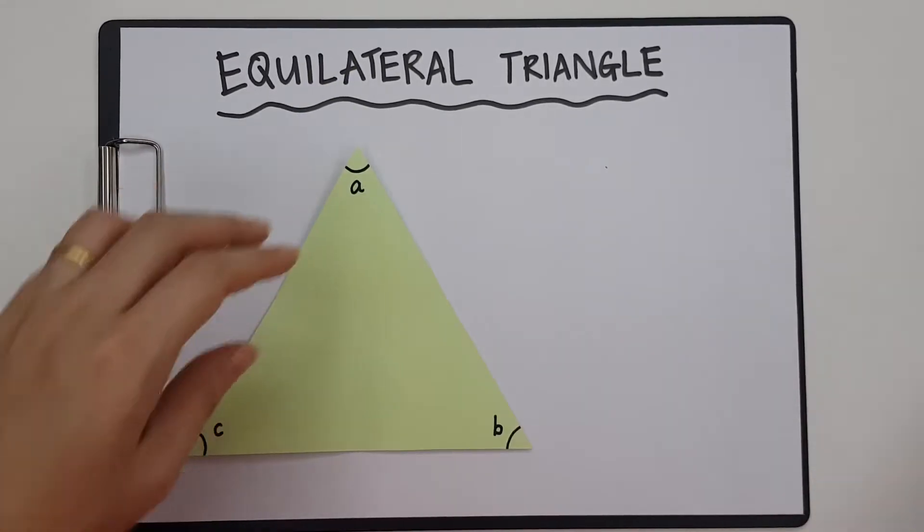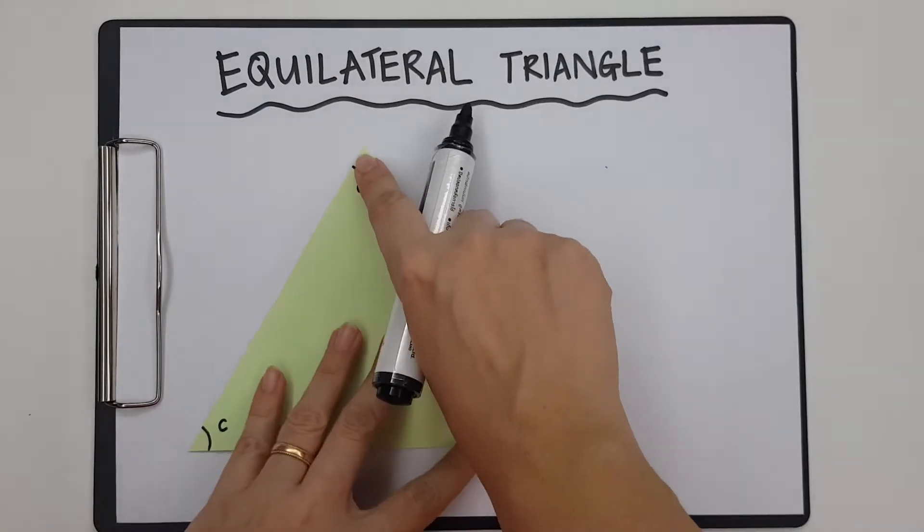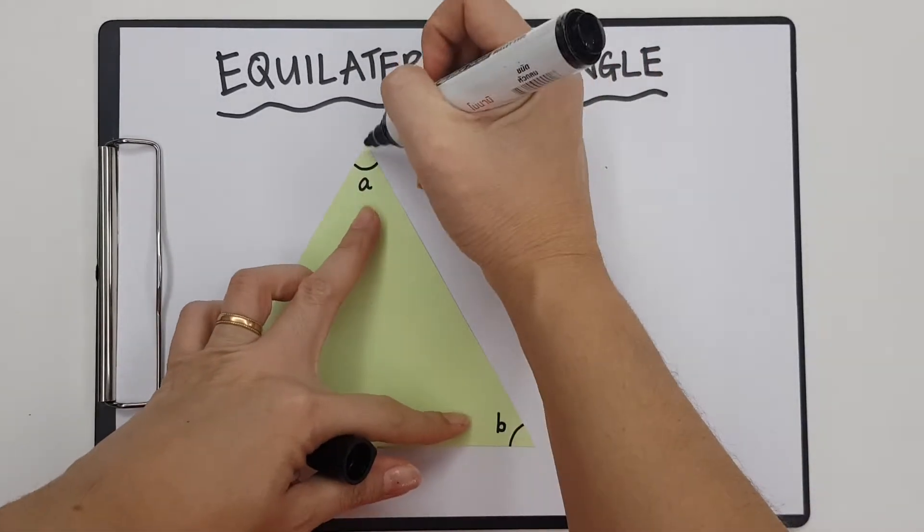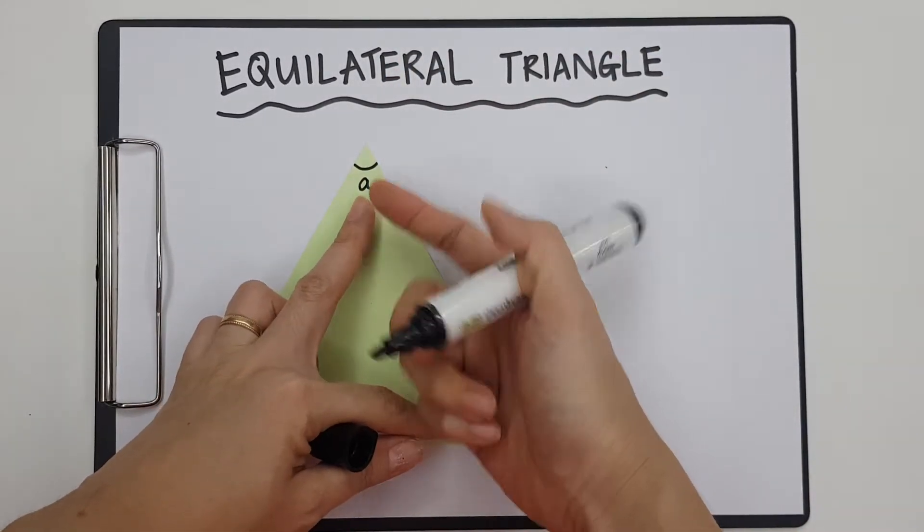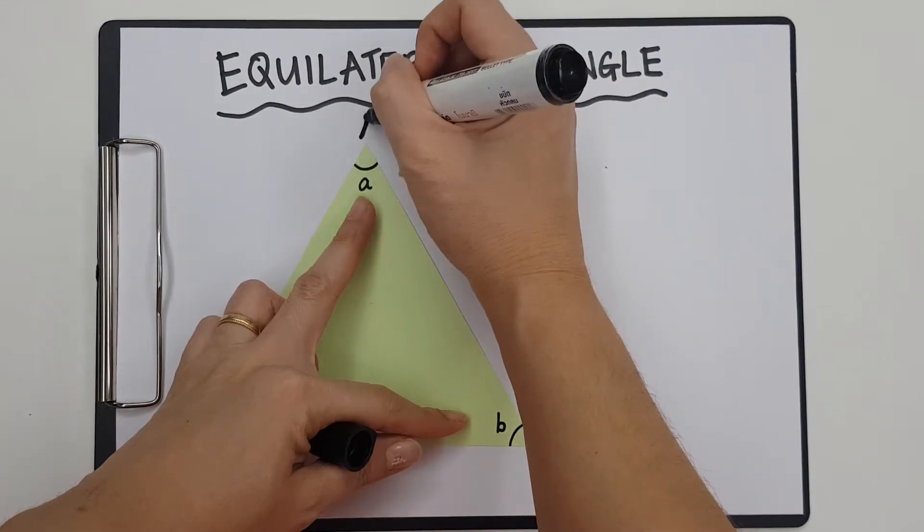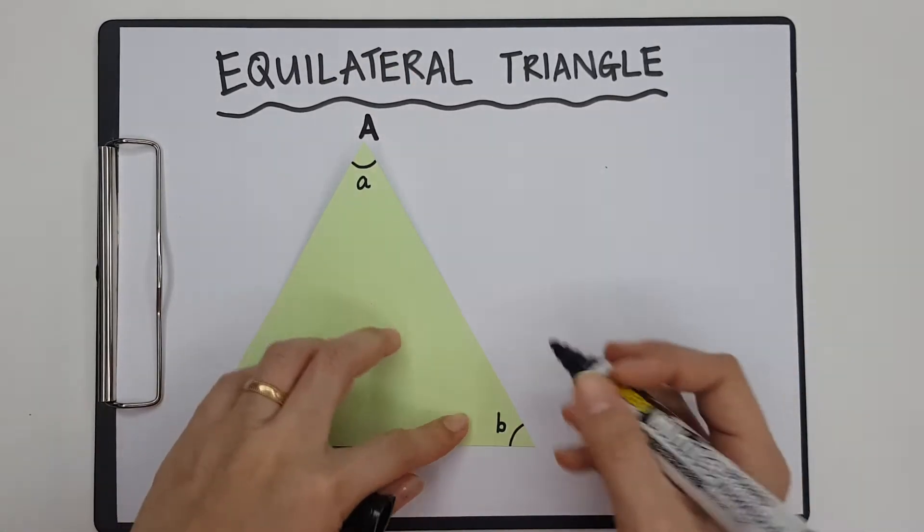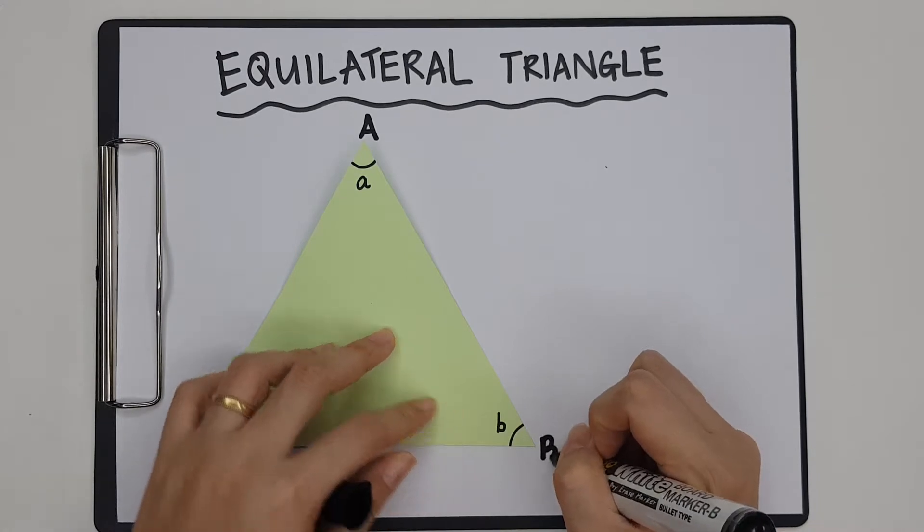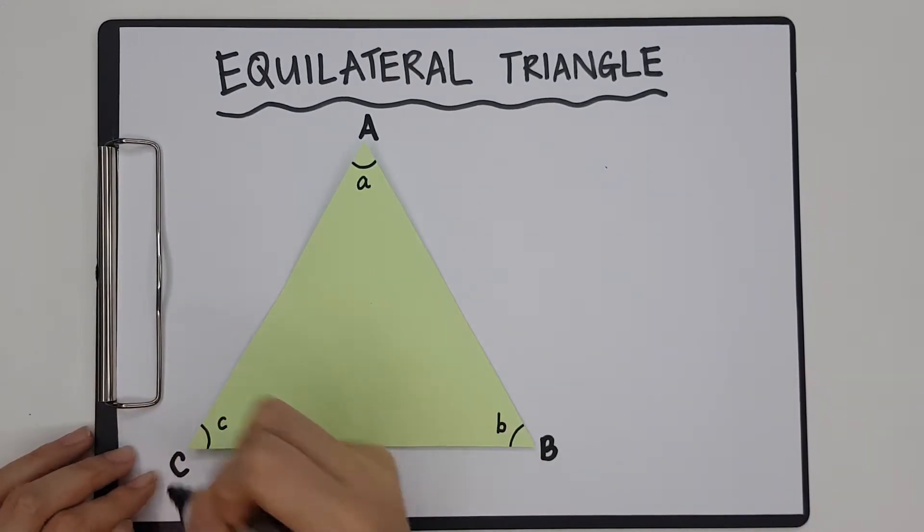Okay so first, let me give all my vertices a name. Since the small angle here is A, this point there I'm going to call capital A, this is going to be capital B, and this will be capital C.